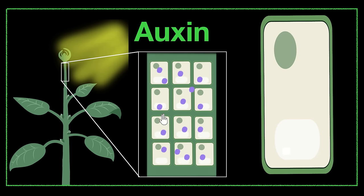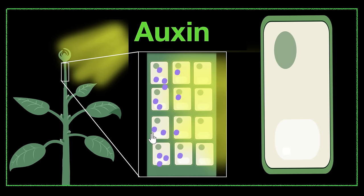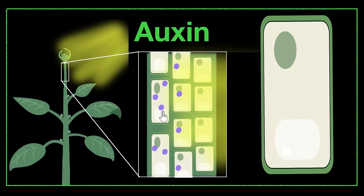Let's imagine these purple dots are auxins — their job is to elongate cells. Now, if light starts falling, auxins have a habit of moving away from the light. This is the shaded region, and this is the region where there's a lot of light. So auxins move away from the light, meaning the auxin concentration increases on the shady side of the plant. As a result, this side will elongate more — these cells start elongating more compared to the lit side.